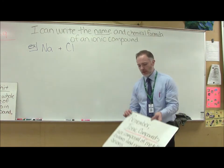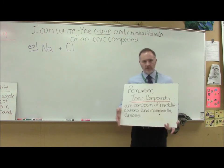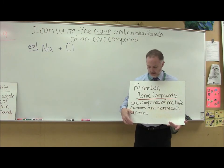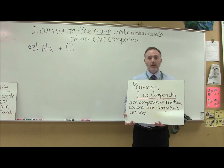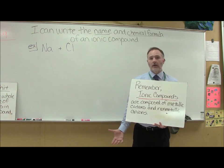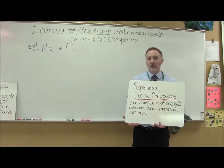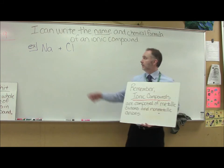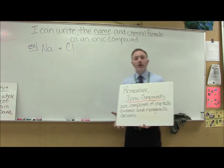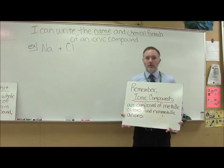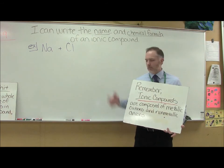First thing I want you to remember is this right here. I want you to remember ionic compounds are compounds that are made up of metallic cations and non-metallic anions. So you're going to have to have a metal and a non-metal in order to have an ionic compound.